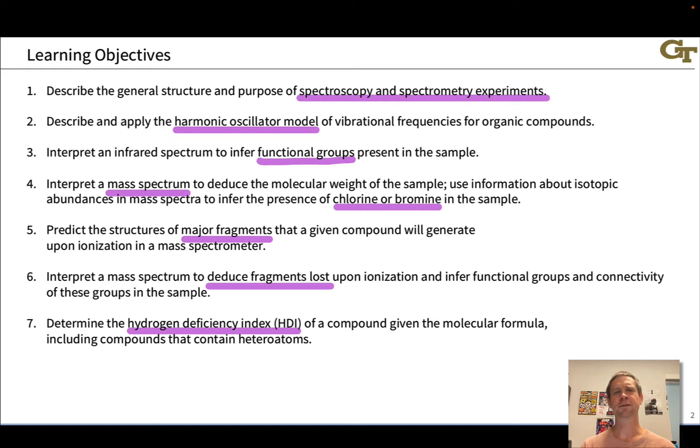In the mass spec experiment, fragmentation of the molecule commonly occurs. And if we know the molecular structure, we can actually predict the structures of these fragments by thinking about relatively stable positions where cations could show up. And if we have a mass spectrum in hand, we can use the quantitative nature of the mass spectrum and the spacing between peaks to deduce fragments that are lost or deduce the structure of a charged fragment that's showing up in the spectrum. All of this gives us structural information about the compound.